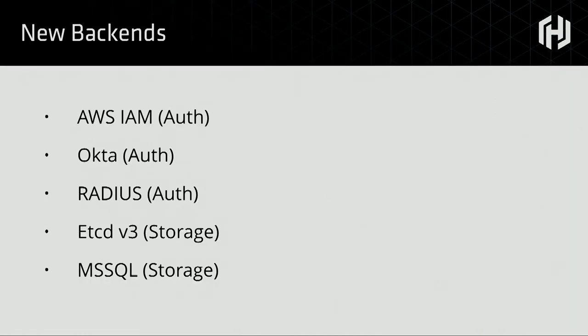There's a bunch more stuff I didn't have time to cover. There's a whole new AWS IAM backend — you can authenticate things like Lambda functions against it and do secret management for what secrets a Lambda function can access. Unified login with Okta and Radius. Etcd version 3 is now supported. MS SQL has come in. There's a bunch of other stuff. Feel free to find me or other people on the Vault team if you have any questions. Thank you guys so much — I'm going to hand it back over to Jack.